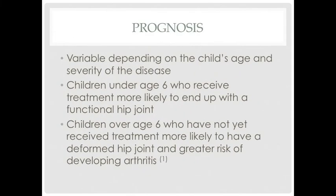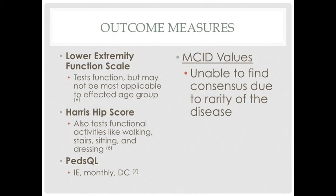The outlook of Legg-Calvé-Perthes depends on the child's age and severity of disease. Children younger than 6 who receive treatment are more likely to end up with a normal hip joint. Untreated children older than 6 are more likely to develop a deformed hip joint despite delayed treatment and may develop arthritis later in life. Because this disease is rare and only found in children, there are no specific LCP outcome measures with MCID values. Functional outcome measures used include the Lower Extremity Functional Scale, the Harris Hip Score, and the PEDS Quality of Life Inventory, administered monthly.